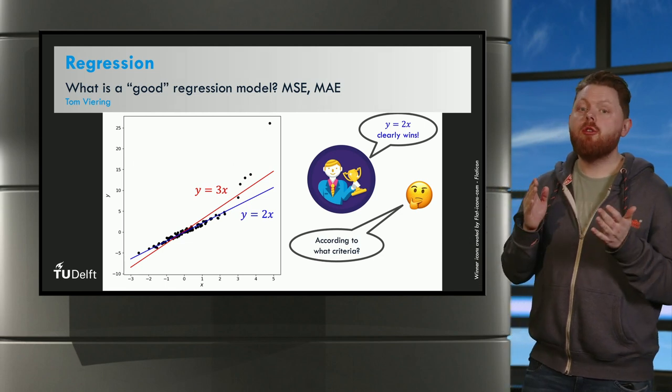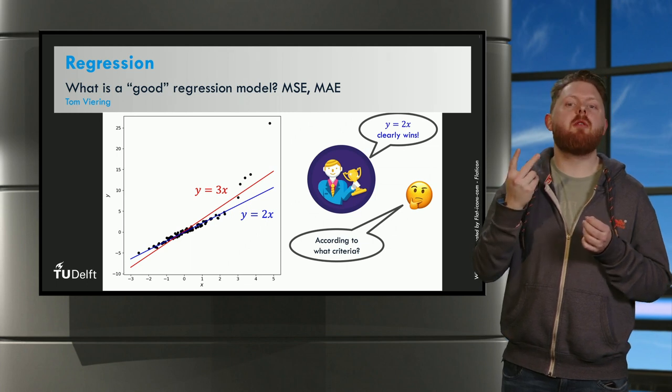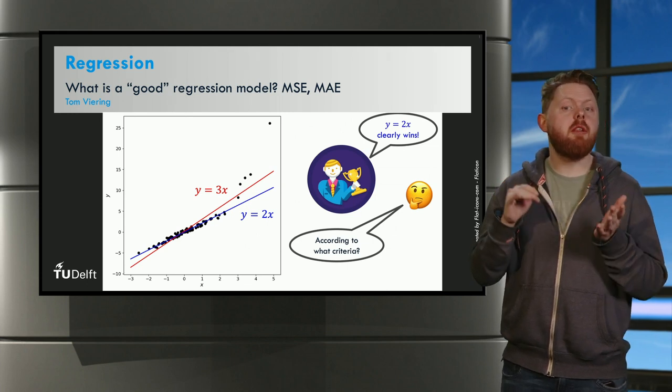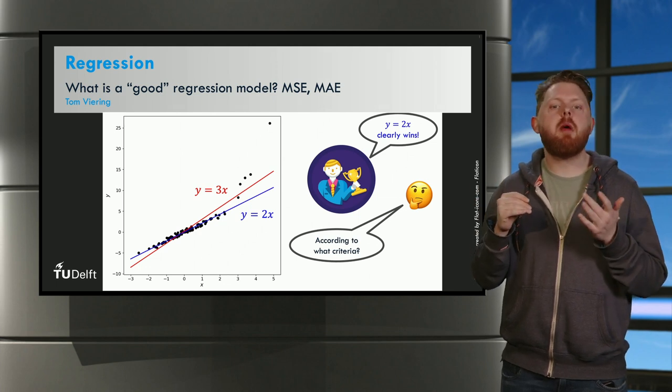In this video we're going to judge how good a regression model is using two evaluation measures called the mean squared error, the MSE, and the mean absolute error, MAE.